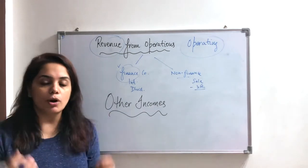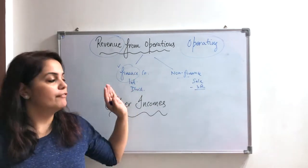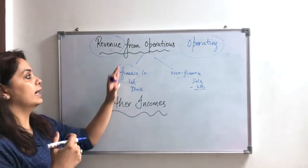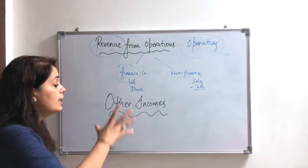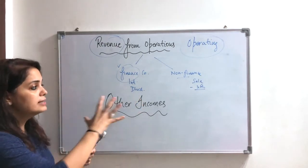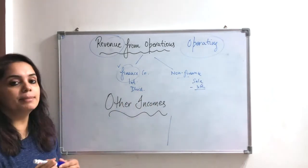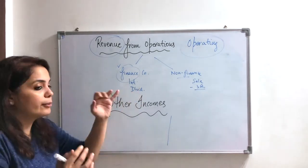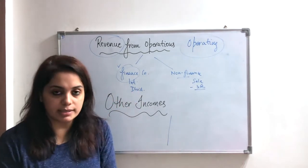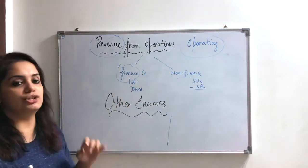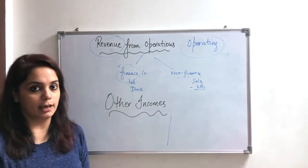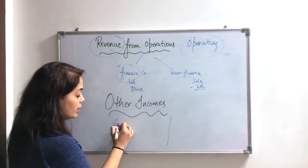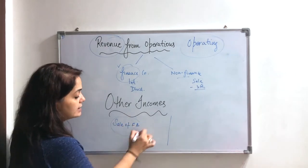Children often have a lot of confusion here. I have now bifurcated for you what finance companies and non-finance companies go through, and what their revenue from operations consists of. Now let's move to other incomes. I will tell you two cases. For a finance company, I explained that when a finance company receives interest, it is revenue from operations. So what comes under other incomes for a finance company? For example, the sale of fixed assets — that would be another income for that finance company.